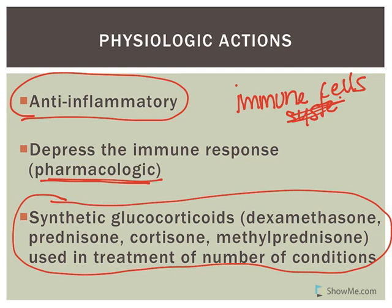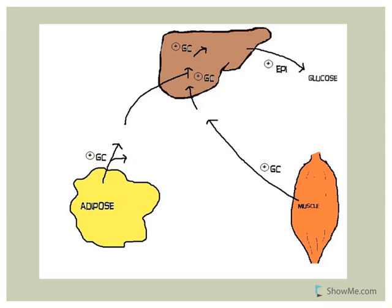The physiologic effects of glucocorticoids on glucose metabolism involve several target organs: the liver, adipose tissue (fat), and skeletal muscle, in addition to immune cells previously mentioned.